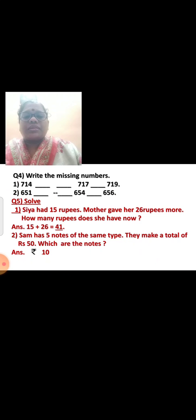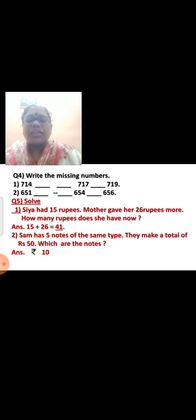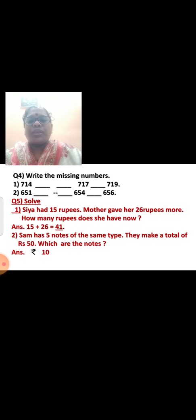Write the missing numbers: seven hundred and fourteen, seven hundred and fifteen, seven hundred and sixteen, seven hundred and seventeen, seven hundred and nineteen. Nine hundred, six hundred and fifty-one, six hundred and fifty-two, six hundred and fifty-three, 654, 655, 656. Now solve: Sia had 15 rupees. Mother gave her 26 rupees. How many rupees does she have now? 15 plus 26 equal to 41.